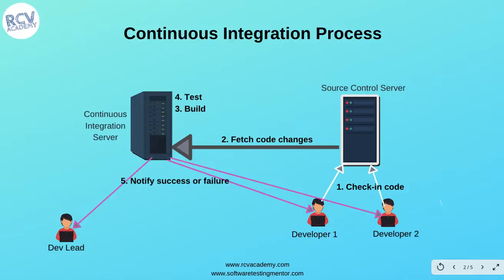As soon as the code has been checked in, the continuous integration process has scripts set up which fetch that code to the continuous integration server. That is step two. From the source control server — there are many tools available, like SVN or Git, which is very popular nowadays — the code changes are fetched.